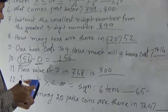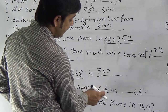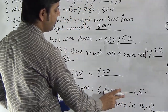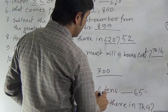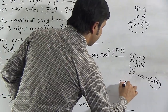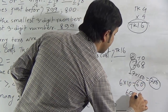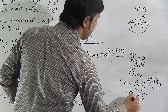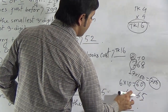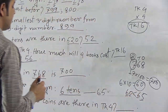Question 12: Insert the sign — greater than, smaller than, or equal. We have 6 tens in the blank compared to 65. First, 6 tens means 6 multiplied by 10, which is 60. Comparing 60 and 65: the tens place is the same, so we compare the ones place. The ones place of 60 is smaller, so we put the smaller than sign.